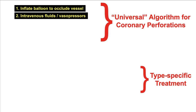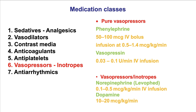After this is done, the second step is to give intravenous fluids and potentially vasopressors if needed. Vasopressors or inotropes may be needed in case of perforation. Phenylephrine, vasopressin, and norepinephrine are commonly used. However, these are just delaying mechanisms.